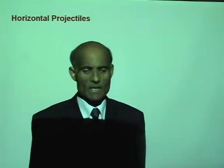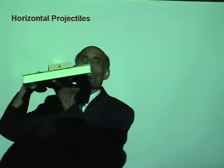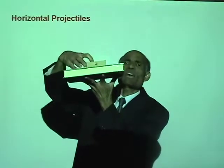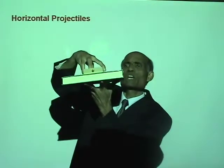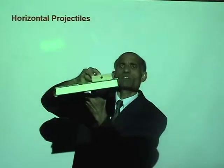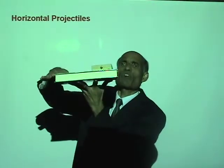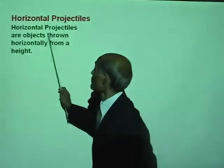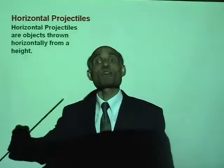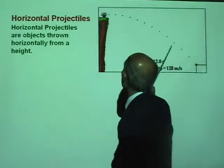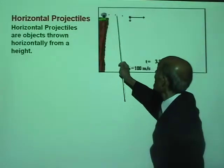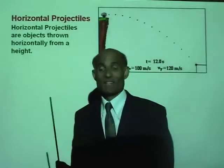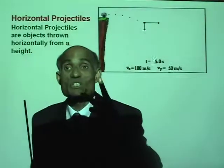Let's now talk about a horizontal projectile. If I keep this block of wood on this book and give it a quick horizontal kick — there you are — that is a horizontal projectile. Horizontal projectiles are objects thrown horizontally from a height. Here is an example: a cannon fired horizontally. That cannonball has two distinct types of motion — it moves horizontally as well as vertically.